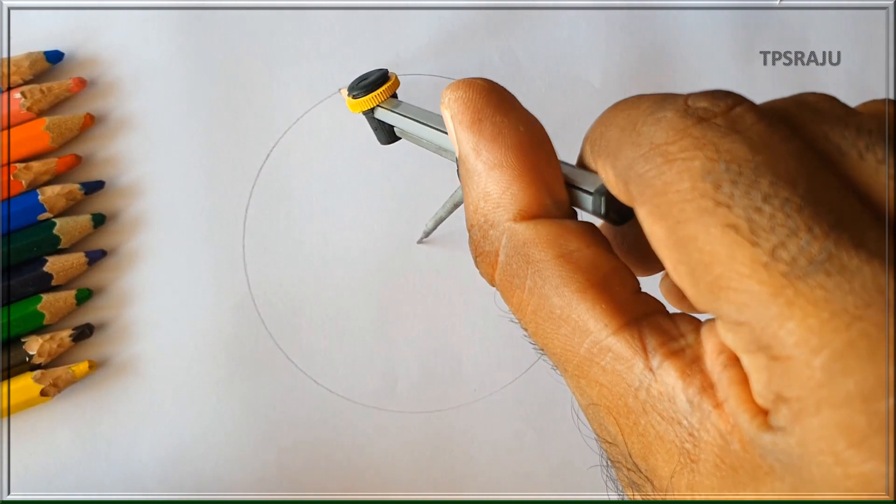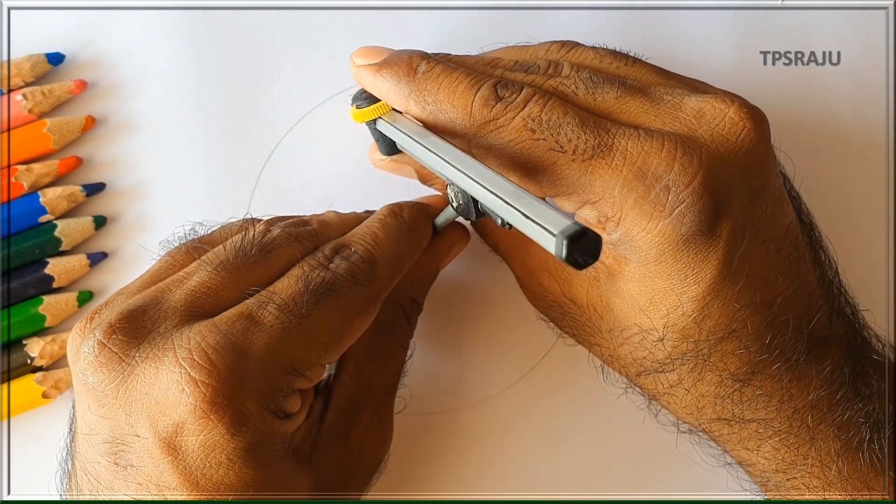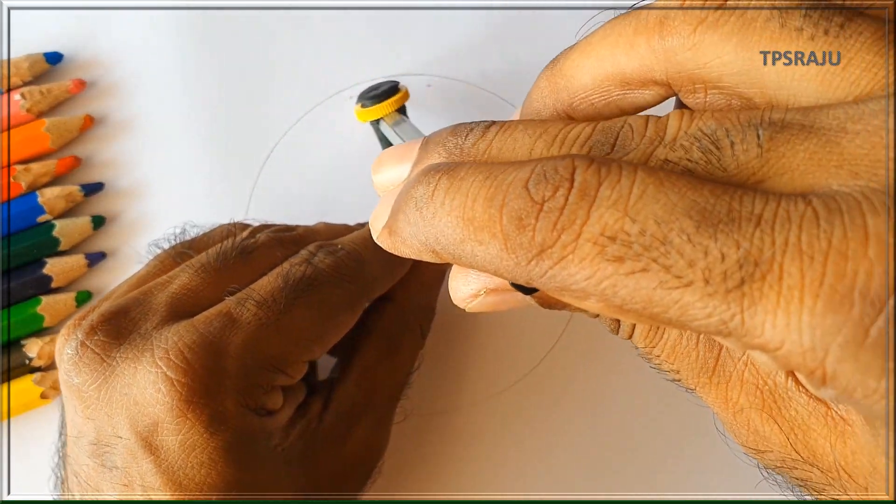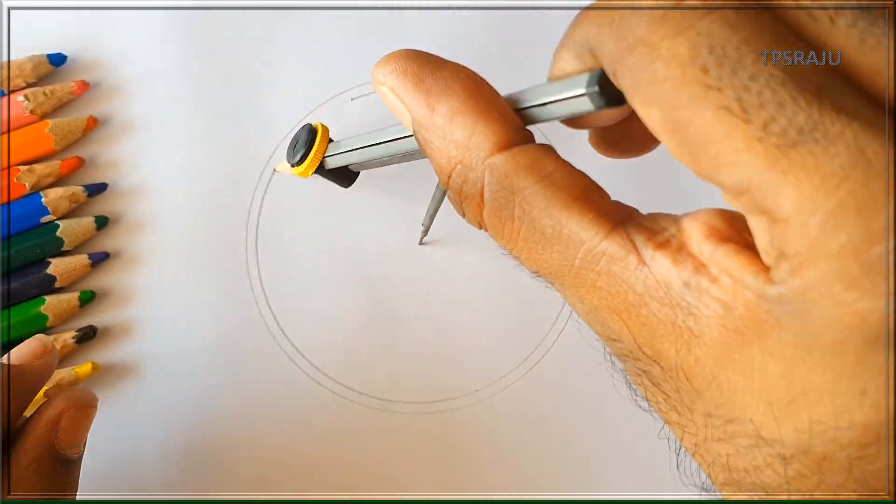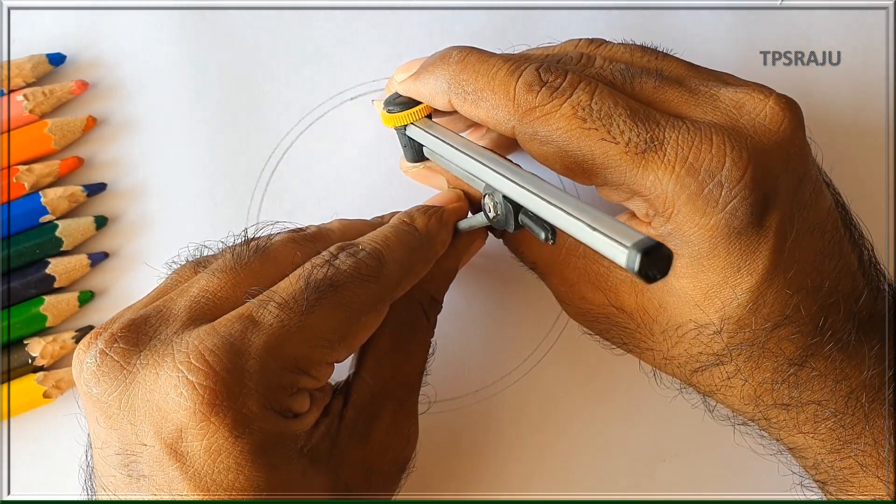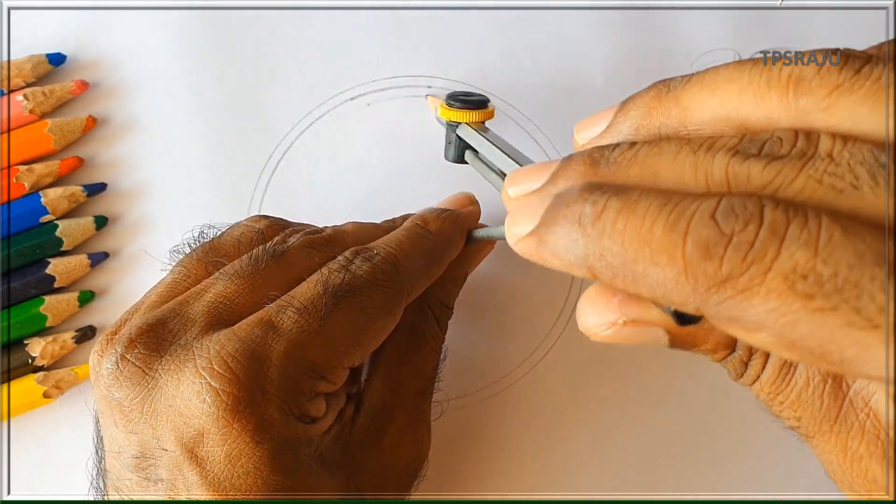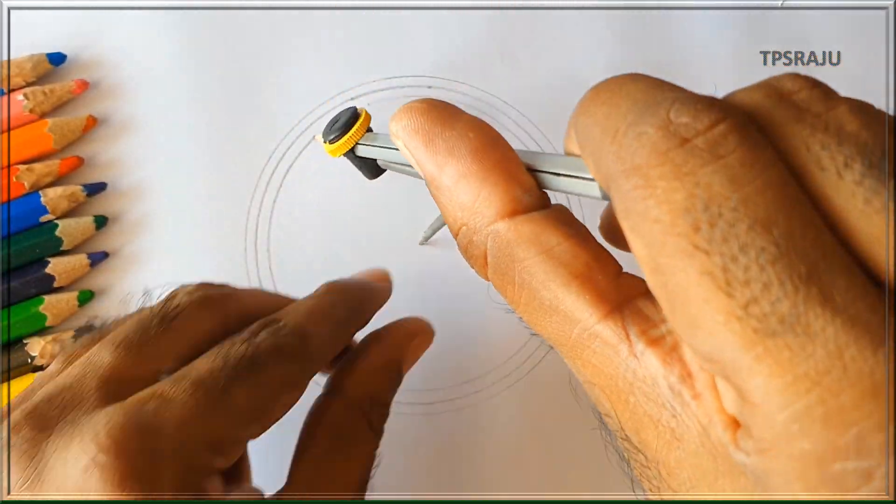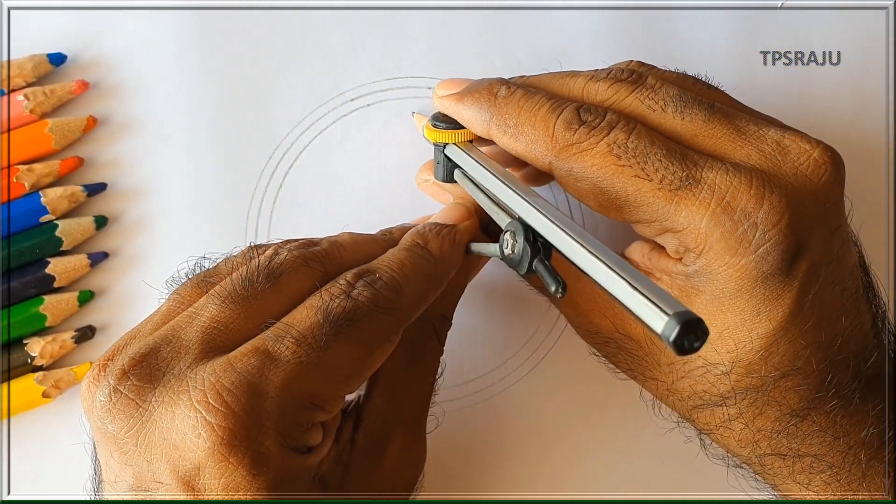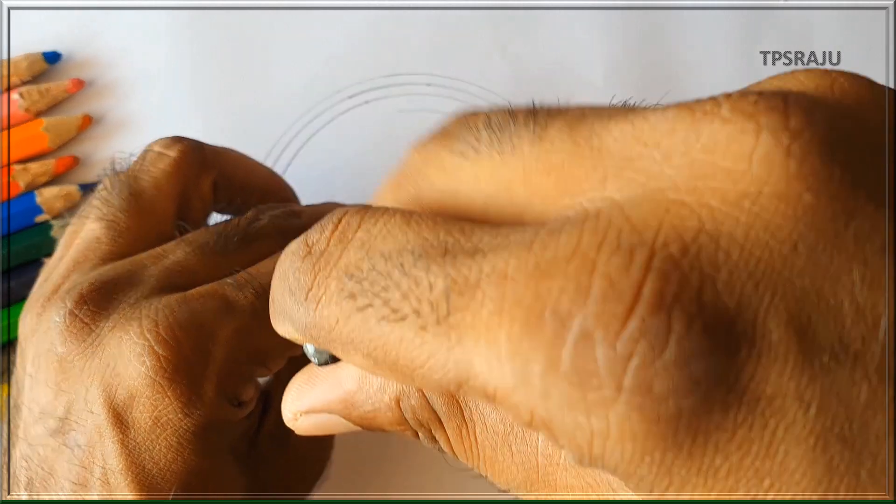Eye is in spherical shape like a ball. It has mainly 3 layers: that is sclerotic layer, choroid layer, and retina. For showing these 3 layers perfectly, first we have to draw 4 concentric circles by using a thin compass.